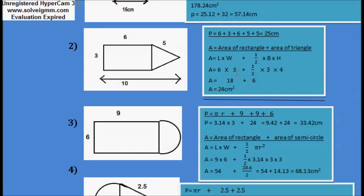The area of the whole figure equals area of rectangle plus area of triangle. Area of rectangle equals length times width, and area of triangle equals 1/2 times base times height. The length of the rectangle is 6, the width is 3. The base of the triangle is 3, because opposite sides are equal, so the base of this triangle is 3.